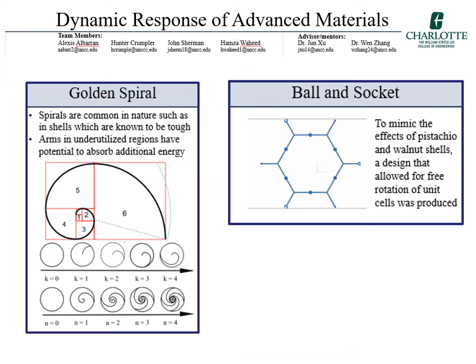The two structures considered are the golden spiral and ball and socket geometries. The golden spiral was inspired by the toughness of seashells which use the same shape. For this presentation, the geometric parameters will be discussed, where N refers to the number of arms in the spiral and K refers to the hierarchy of the spiral.